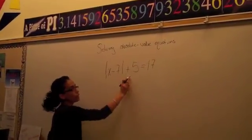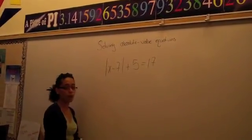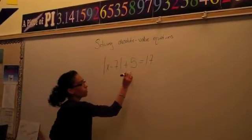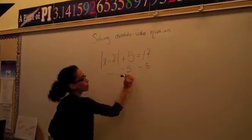In order to get the 5 to the other side, we have to do the opposite. The opposite of addition is subtraction. So subtract 5 to both sides.